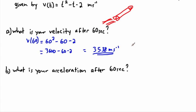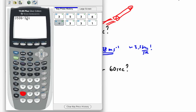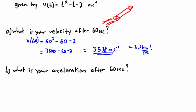3538 meters per second is extremely fast — around 3.5 kilometers every second. The speed of sound is around 331 meters per second, so if we divide 3538 by 331, that's roughly Mach 10. You're going 10 times the speed of sound.